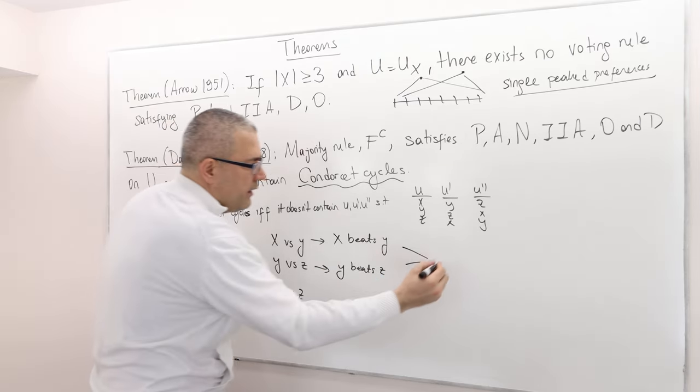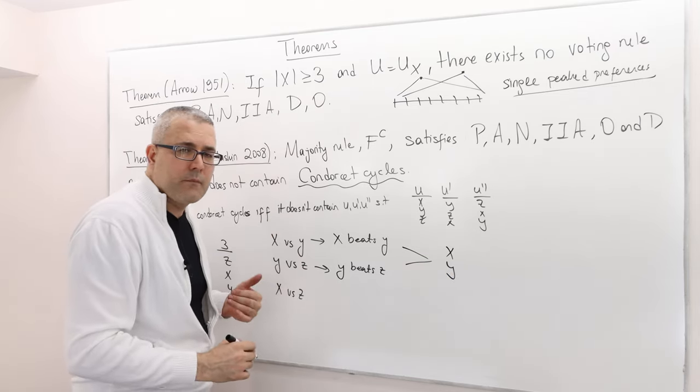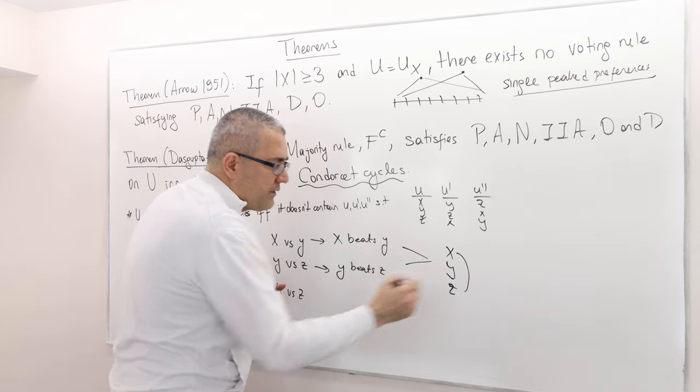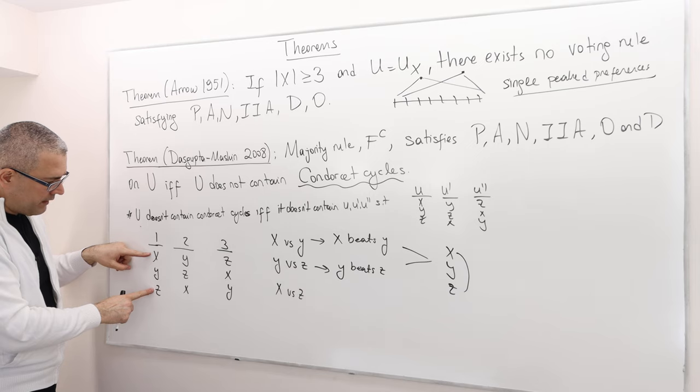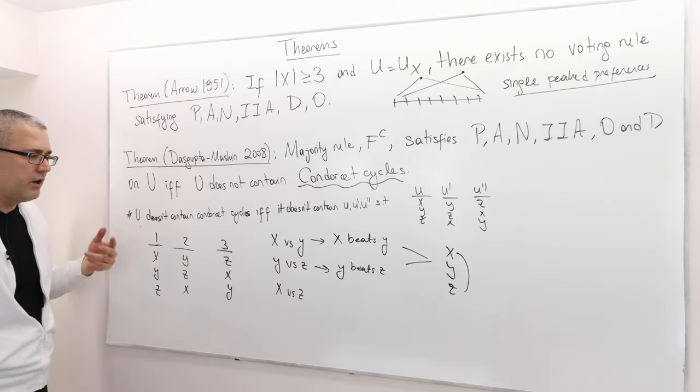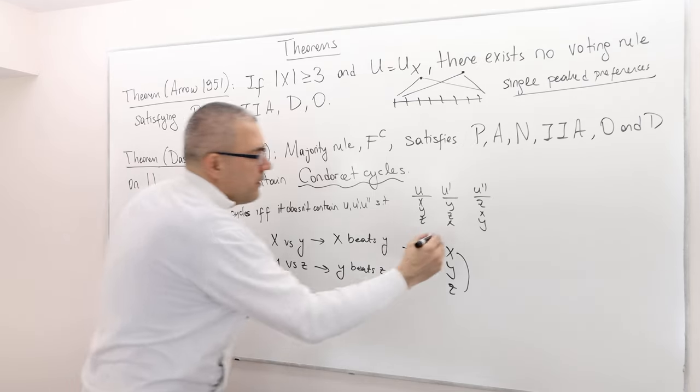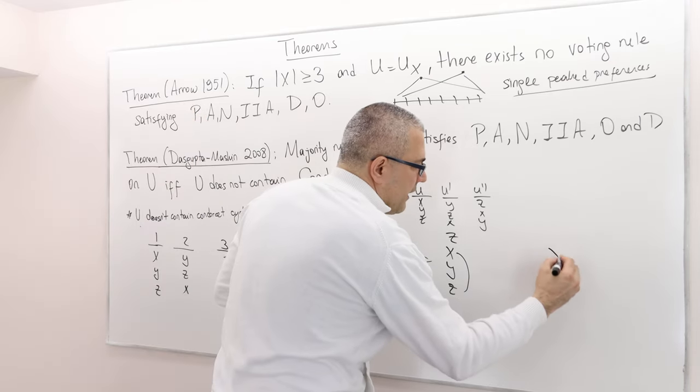What about x versus z? If I look at these two, I can say the majority prefers x to y and majority prefers y to z. But what about x to z? Can I say that majority prefers x to z? x is better than z, z is better than x, z is better than x. So majority actually prefers z to x.